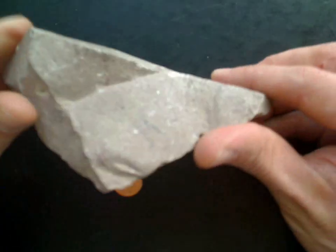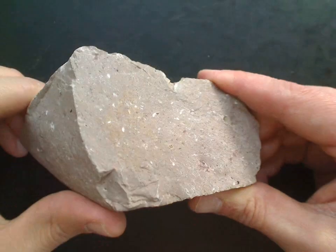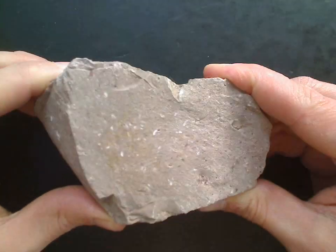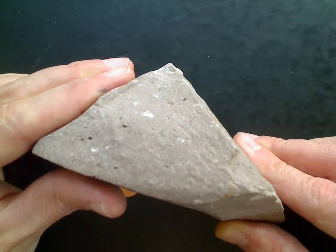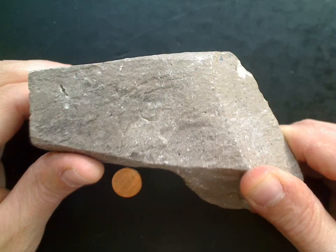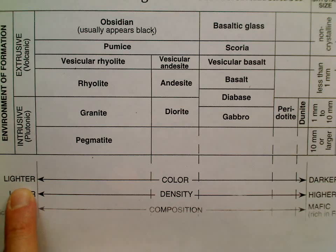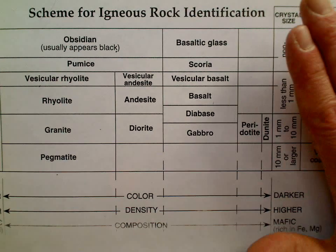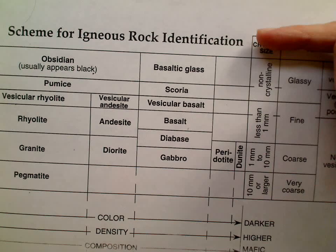Now let's look at rocks that take a little longer to cool — these are still on the surface of Earth. Notice this one has a light, kind of pinkish color. You can't see the minerals with the naked eye; they're really small and you'd need a microscope. This is going to be called fine-grained texture. This rock is rhyolite because it is a light color. All rocks on this side of the chart are lighter color because they have light-colored minerals in them.